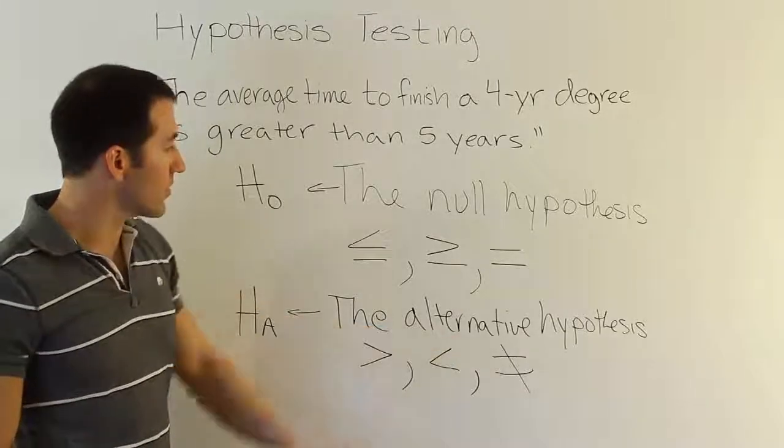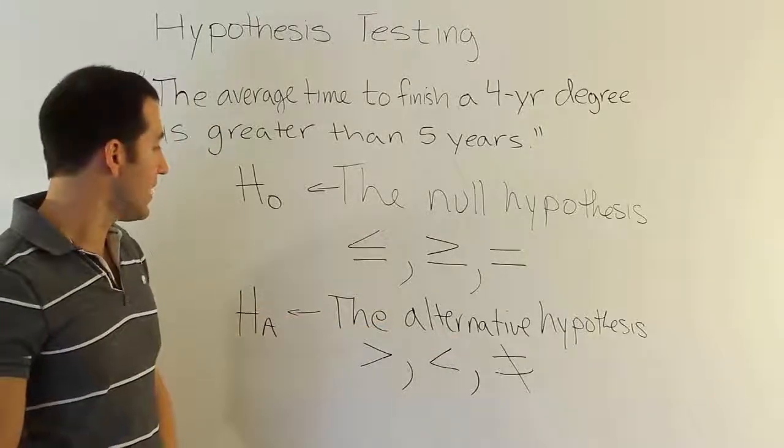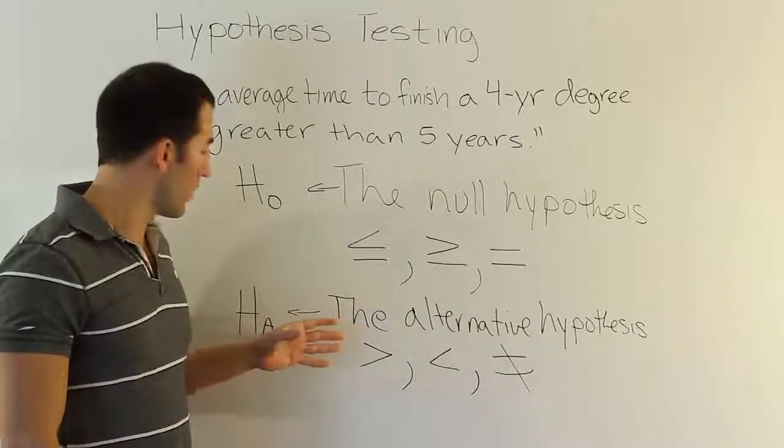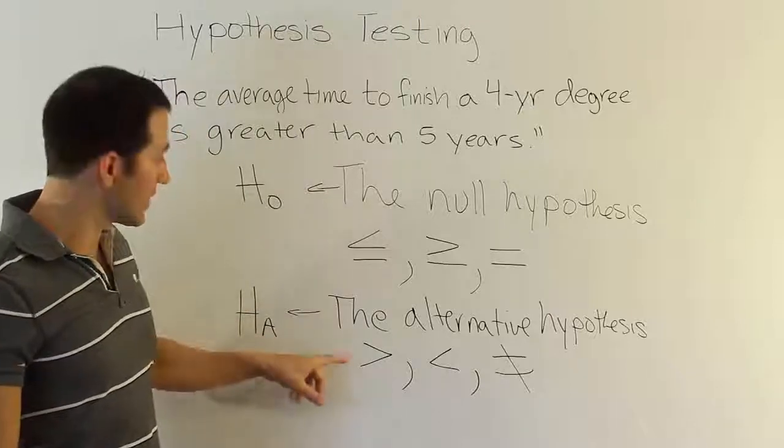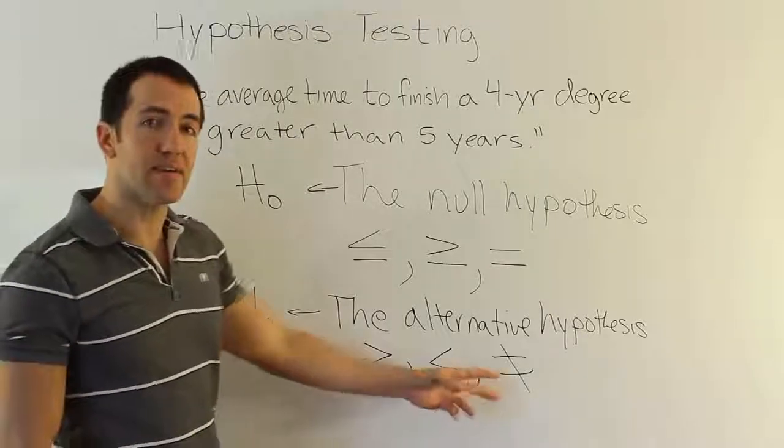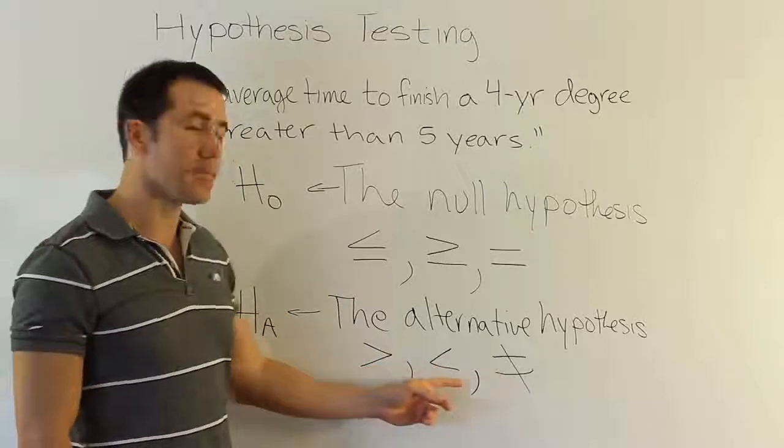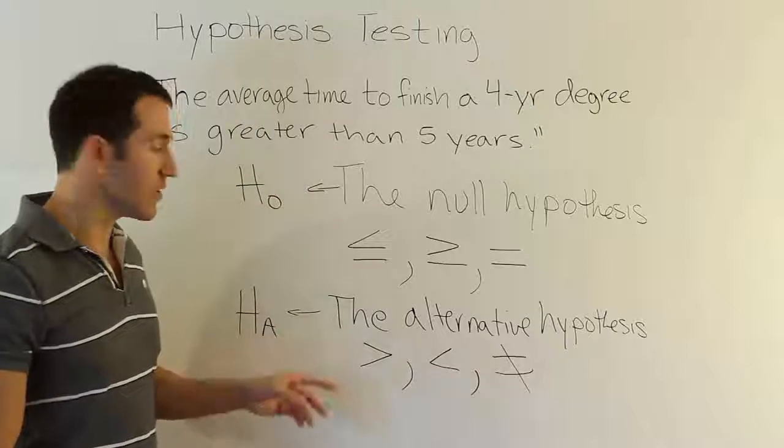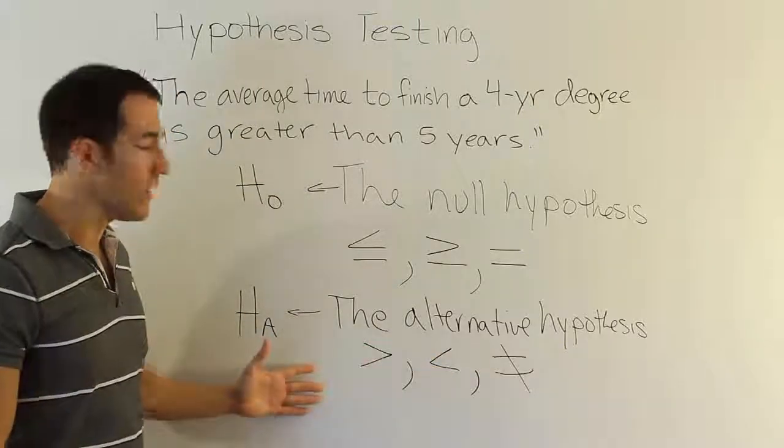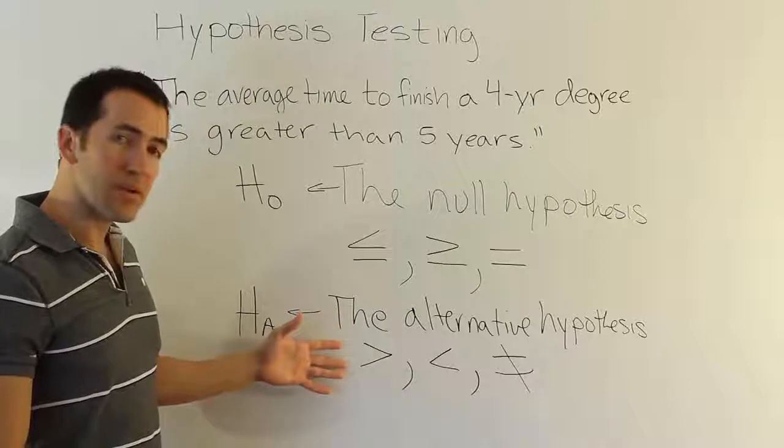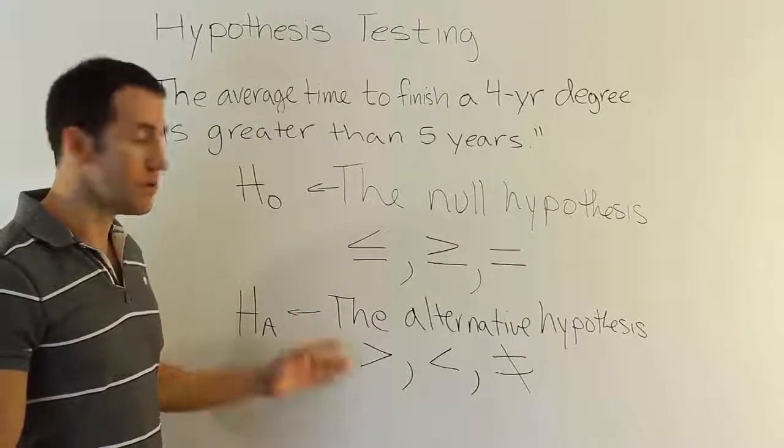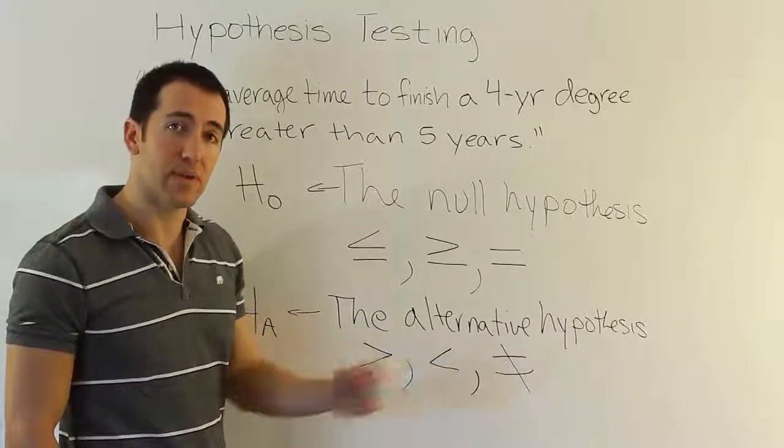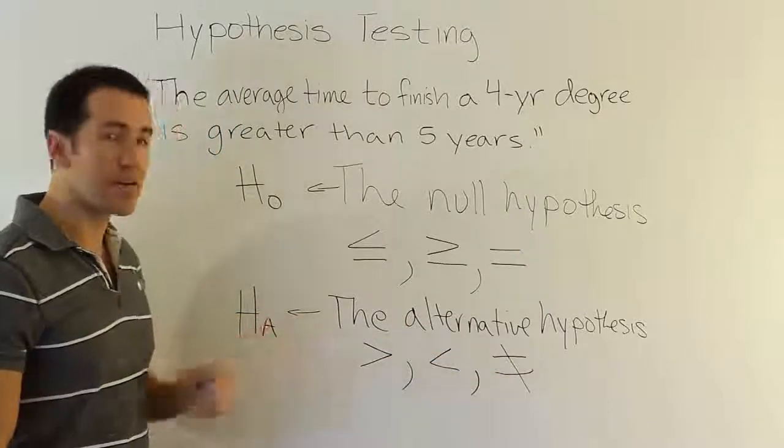The last thing I want to say about the alternative hypothesis is that it's going to determine what kind of hypothesis testing procedure we use ultimately. We're going to learn later on that there's such a thing called a right-tail test, a left-tail test, and a two-tail test. That's going to be corresponding to these symbols that we have here for the alternative hypothesis. We're going to learn to look at the symbol in the alternative hypothesis and know what kind of testing procedure to use.